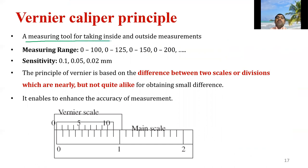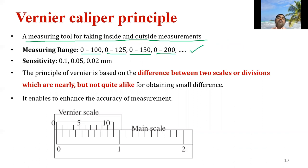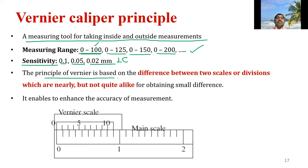Vernier caliper is a measuring tool for taking inside and outside measurements. Instruments are available in ranges from 0 to 100, 0 to 125, 0 to 150, and 0 to 200 mm. The sensitivity or least count varies and may be 0.1, 0.05, or 0.02 mm. The principle of the vernier caliper is based on the difference between two scales or divisions which are nearly equal but not quite alike, for obtaining a small difference.